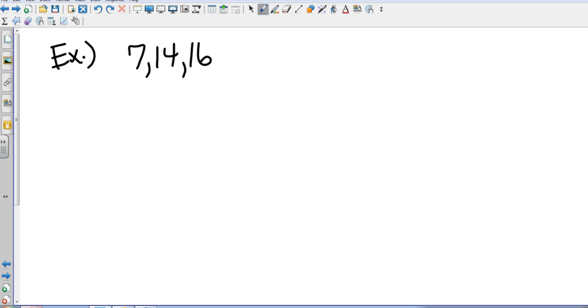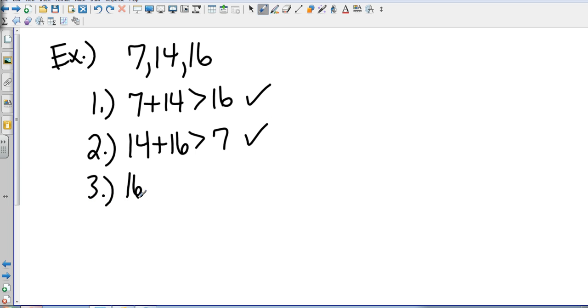OK so the triangle inequality from way back, we've got three tests we have to run here. We have to take 7 plus 14 and that has to be greater than 16 and that is true. Then we take another set of sides, let's go with 14 and 16 and that has to be greater than the third side, that is also true. And then the third test we're going to take 16 plus 7 and that has to be greater than 14 and that is also true so we know it is a triangle.